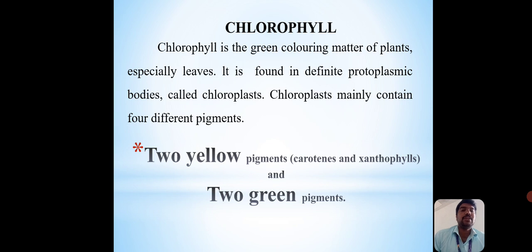Chlorophyll is a green coloring matter of plants, especially leaves. It is found in different protoplasmic bodies called chloroplasts. Chlorophyll mainly contains four different pigments: two yellow pigments and two green pigments.